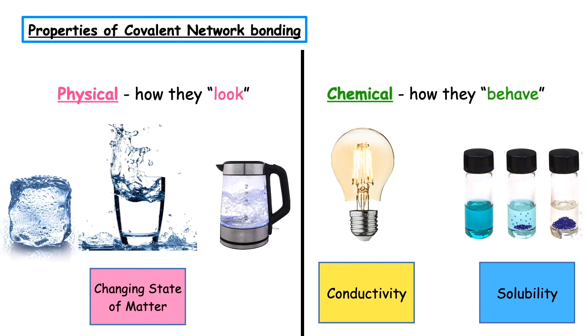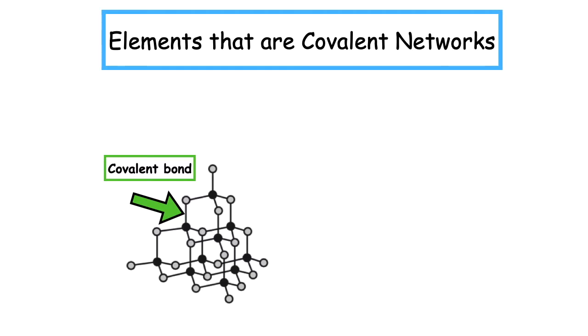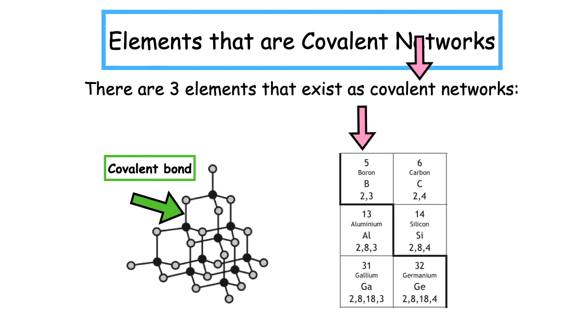We already know that a covalent bond is the sharing of a pair of electrons. Non-metal elements tend to form covalent bonds - those are elements found on the right-hand side of the periodic table. The three elements that exist as covalent networks are boron, carbon, and silicon. The way I like to remember this is it's the cozy corner - they are in the corner of the staircase which separates the metal elements from the non-metal elements.